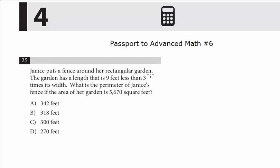Janice puts a fence around her rectangular garden. The garden has a length that is 9 feet less than 3 times its width. What is the perimeter of Janice's fence if the area of her garden is 5,670 square feet? We're told that the length is 9 feet less than 3 times the width. We're also given that the area is 5670, and we know that length times width equals area.